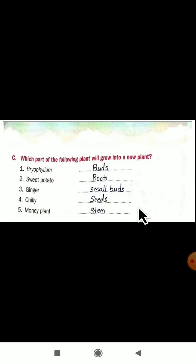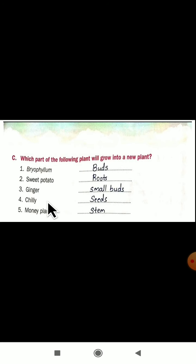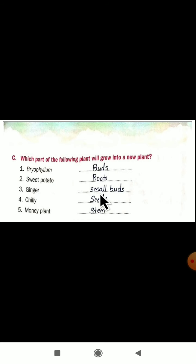Which part of the following plant will grow into a new plant? Bryophyllum — it will grow from buds. Sweet potato — roots. Ginger — small buds. Chili — from seeds. Money plant — stem. Bryophyllum grows from buds, sweet potato from roots, ginger from small buds, chili from seeds, and money plant from stem.